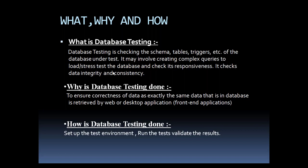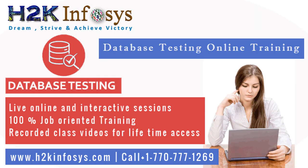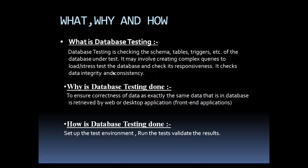So these are the things we do in database testing. Why is database testing done? To ensure correctness of data — that exactly the same data that is in the database is retrieved by the web or desktop front-end application. How is database testing done? As in any testing activity: set up a test environment, prepare test cases in the test case generation phase, then execute those test cases in the test case execution phase, and finally validate the results.